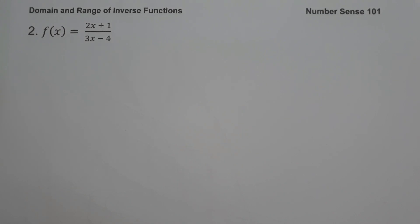On example number 2, f of x equals 2x plus 1 all over 3x minus 4. This time, the given example is a rational function. To find the domain of the given function, we equate the denominator not equal to zero.